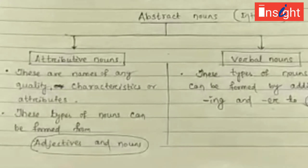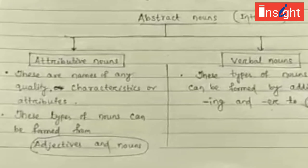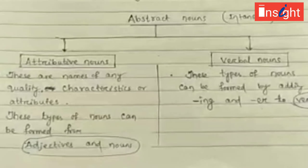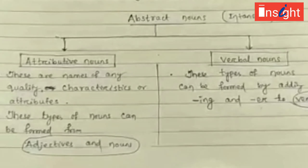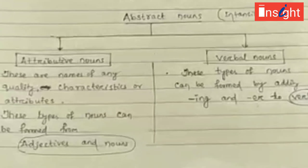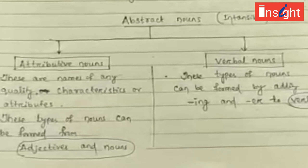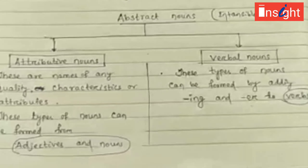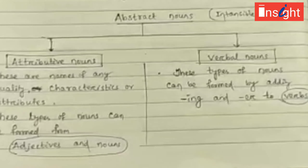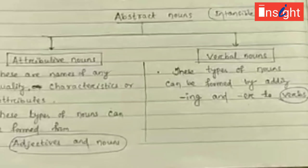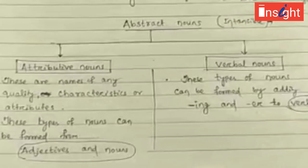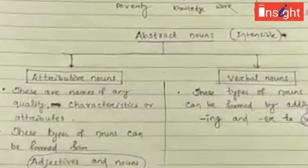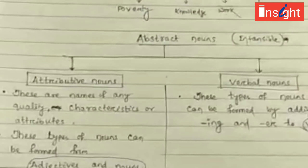Abstract nouns are of two kinds: one is attributive noun and the second is verbal noun. Attributive nouns are the names of any quality, characteristic, or attribute. Words which describe qualities or characteristics come under attributive nouns, and they can be formed from adjectives or nouns. Verbal nouns are nouns formed from verbs by adding something to a verb.